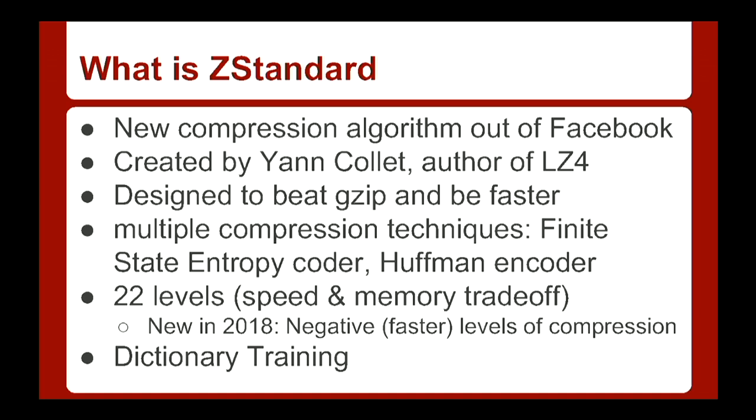They had 22 levels until they added infinite negative levels a couple of months ago. In addition to levels one through 19, which provide higher and higher compression at slower and slower speeds, they have levels 20 through 22 as ultra mode, which I didn't put into ZFS because the memory requirements don't make sense for the block sizes we're working with. I haven't yet implemented the negative levels, but I'm going to talk about why those would be interesting and how we might implement them in ZFS.